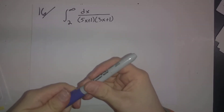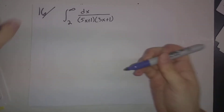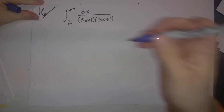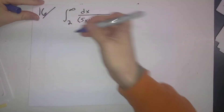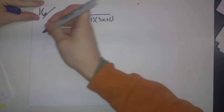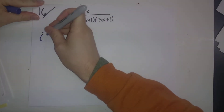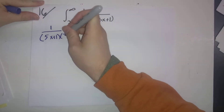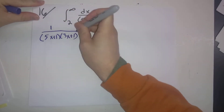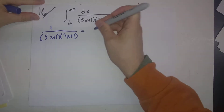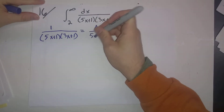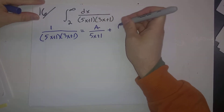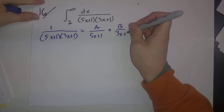The first step is to find the partial fractions decomposition. So for that, I'm going to write 1 over (5x+1)(3x+1) as A over (5x+1) plus B over (3x+1).